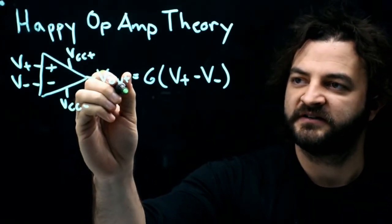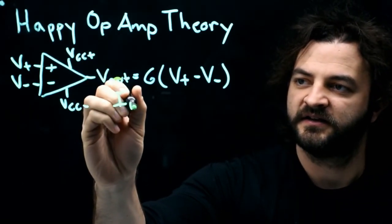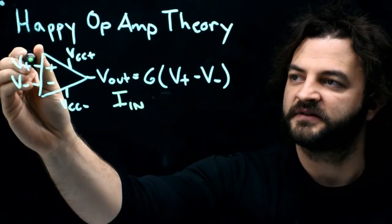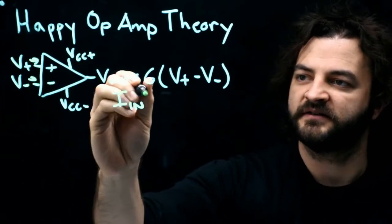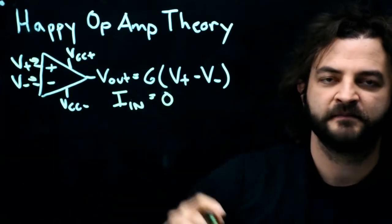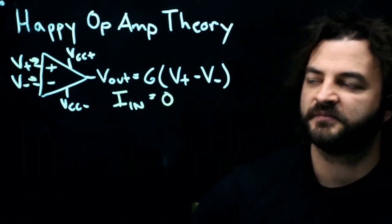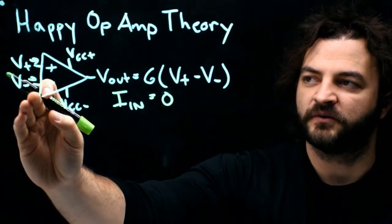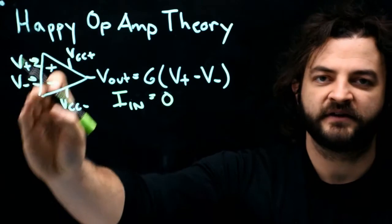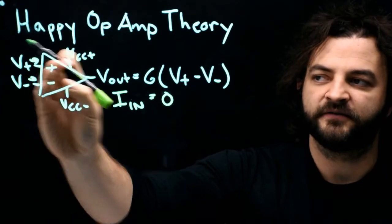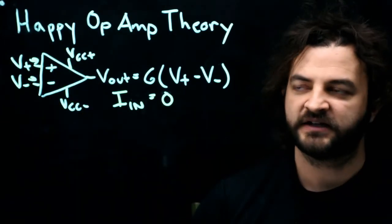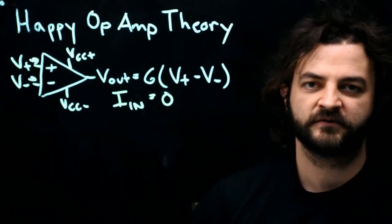Another thing we need to know is that i in, the current at the inputs to the op-amp, is always zero, or about zero. This is important because what we want to know is what is the current doing on the outside of the op-amp. The op-amp itself only observes voltages, and it tries not to use any current from the source.